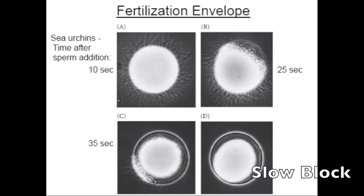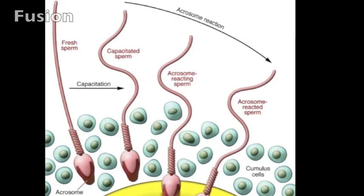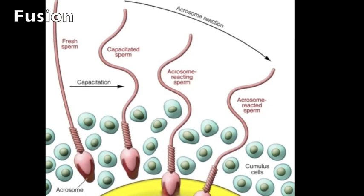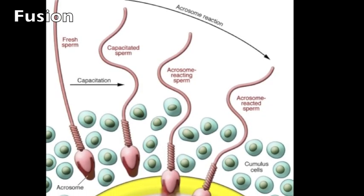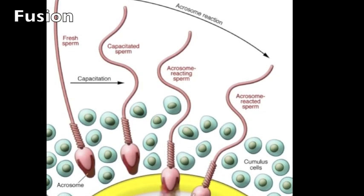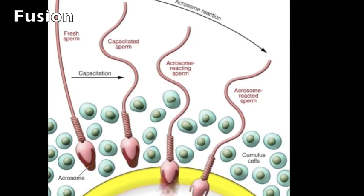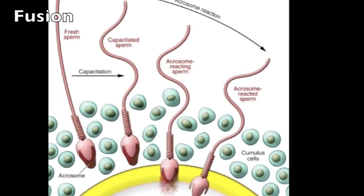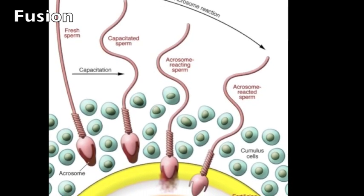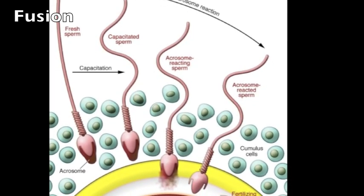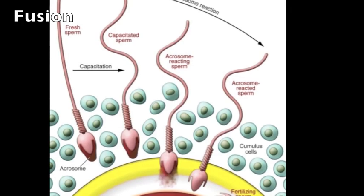Once the sperm has entered into the egg and the egg has prevented polyspermy, it can move on to the next step, which is called fusion. Fusion refers to when the female and male gametes fuse together to produce a diploid zygote. As the sperm nears the center of the egg, it fuses with the membrane of the secondary oocyte.